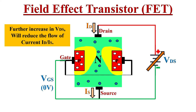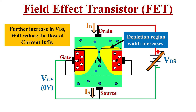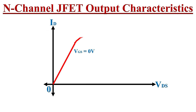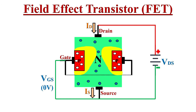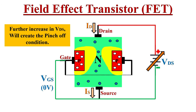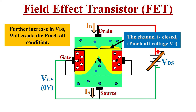If we keep on increasing VDS, the width of the depletion region increases and the channel becomes narrower and narrower. Due to this reduced channel width, the channel resistance will increase and this reduces the current flow. The slope of the line changes and becomes more and more horizontal. If we further increase VDS, at one particular voltage the two depletion regions will touch each other — this condition is known as the pinch-off condition.